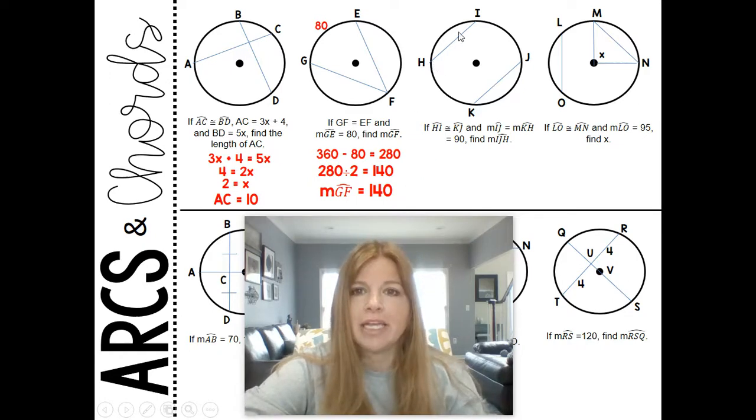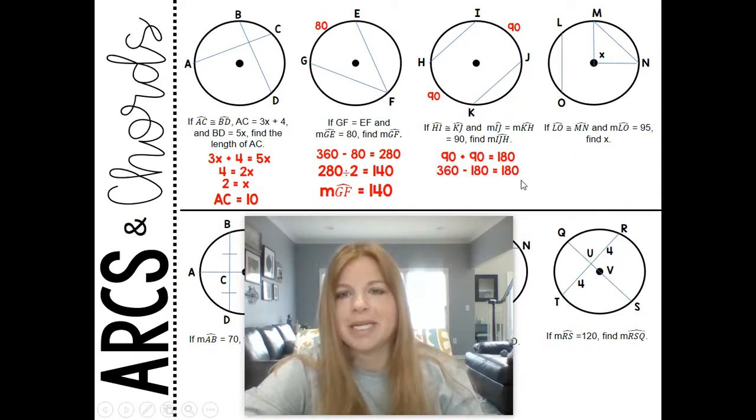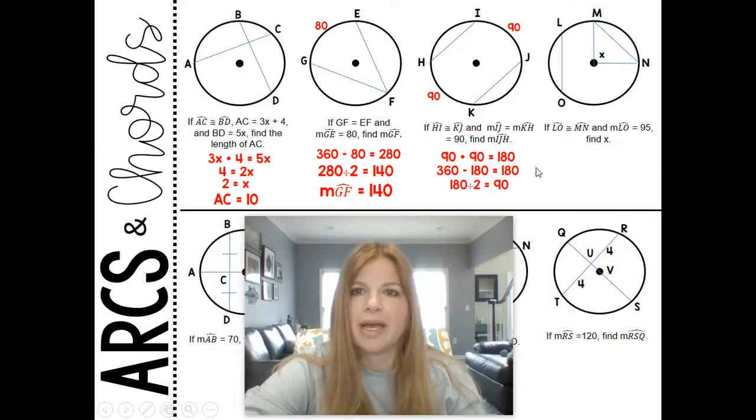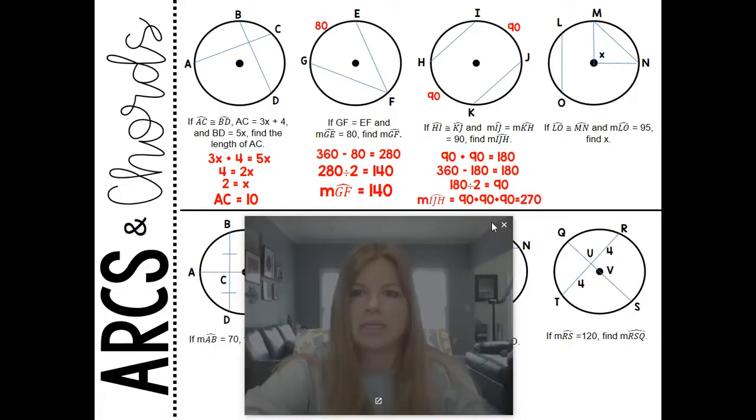Next one: if arc HI is congruent to arc KJ, and the measure of IJ is equal to the measure of KH, so that means those arcs are congruent and they equal 90, find arc IJH, that entire major arc. So if that's 90 and that's 90 from our information that we're given, and we're told that these two arcs are congruent to each other, well, those add up to 180. 360 minus 180 is 180. And then, that would mean that this segment here is 90. So then 90 plus 90 plus 90, the whole way around, would be 270.